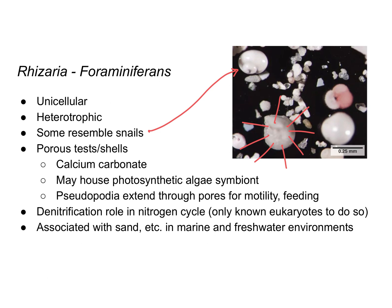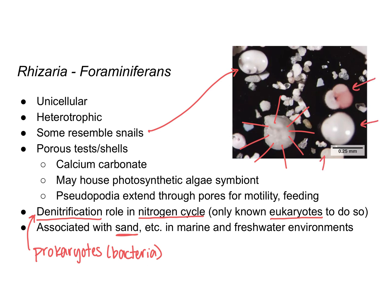Some foraminiferans also house photosynthetic algae as a symbiont. One especially interesting component of foraminiferans is that they are denitrifiers — they play a role in the nitrogen cycle through denitrification. Foraminiferans are the only known eukaryotes to do so, as this type of chemical reaction is mostly associated with prokaryotes, especially bacteria. You can often see the leftover shells of foraminiferans when looking at sand under a microscope; their microscopic shells actually contribute to the makeup of sand.